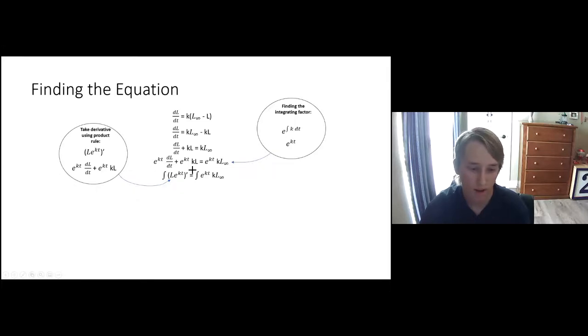And then you integrate both sides obviously. Next the prime and the integral cancel out and you just integrate that, and you have to put a plus c because you just integrated. After that we're trying to put L by itself because that gives us the length of the fish at a specific time.